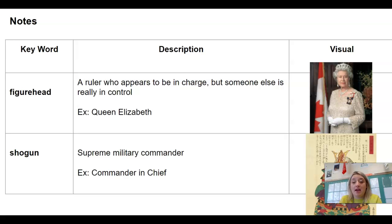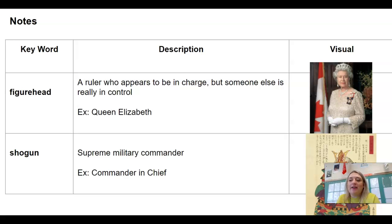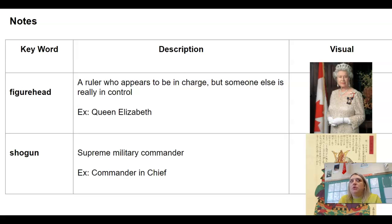We can see a figurehead today with Great Britain and Queen Elizabeth. She's the queen, but she doesn't have a lot of political influence or power — she's just a figurehead, respected and recognized as the queen, but she's not doing most of the work. Most of the work is done by the prime minister of Great Britain, who would be the equivalent to our president. She doesn't really do anything with the government, but we know her as the queen.